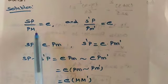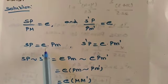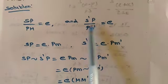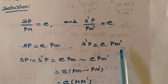Then taking cross multiplication we get SP is equal to e into PM. Then S dash P is equal to e into PM dash.